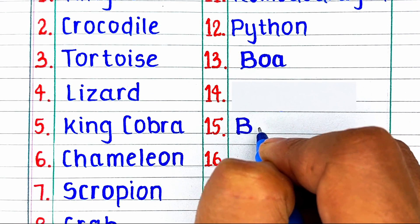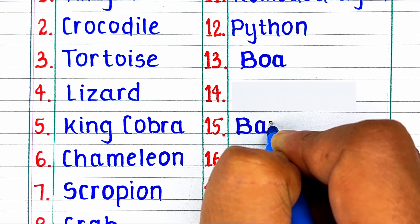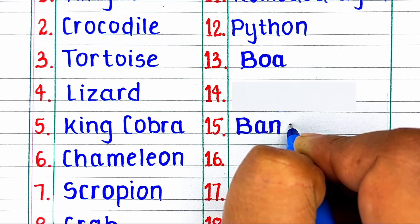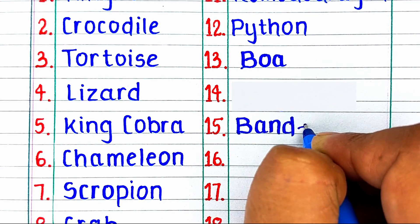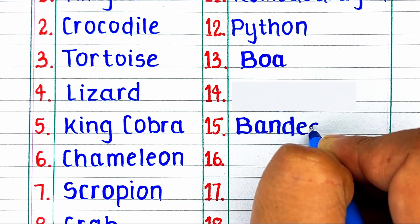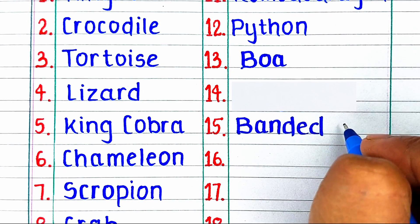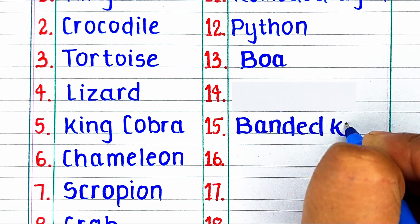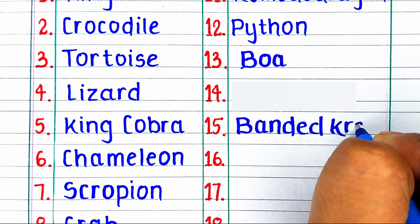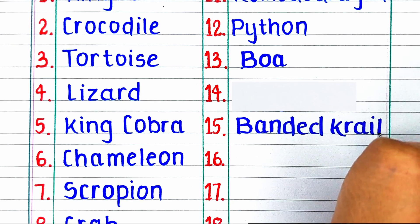Next reptile in our list is B-A-N-D-E-D K-R-A-I-T, banded krait.